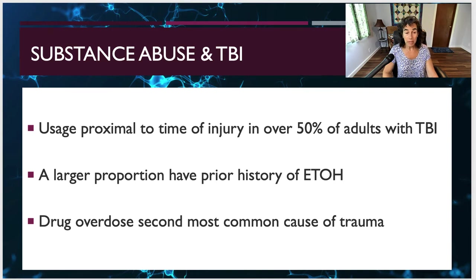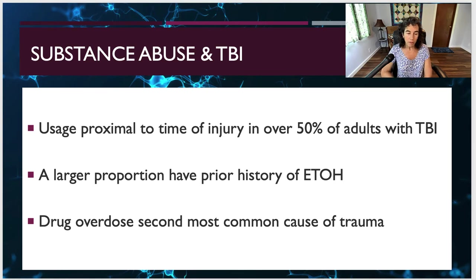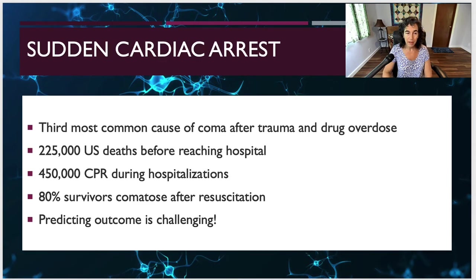With regard to substance abuse and TBI, usage proximal to the time of injury — in close proximity — accounts for over 50% of adults with TBI. A larger proportion have a prior history of ETOH, which stands for the chemical abbreviation for ethyl alcohol, basically drinking. Drug overdoses are the second most common cause of trauma. Another cause of brain injury is sudden cardiac arrest — it's the third most common cause of coma after trauma and drug overdose. 225,000 people in the US per year die before they reach the hospital.